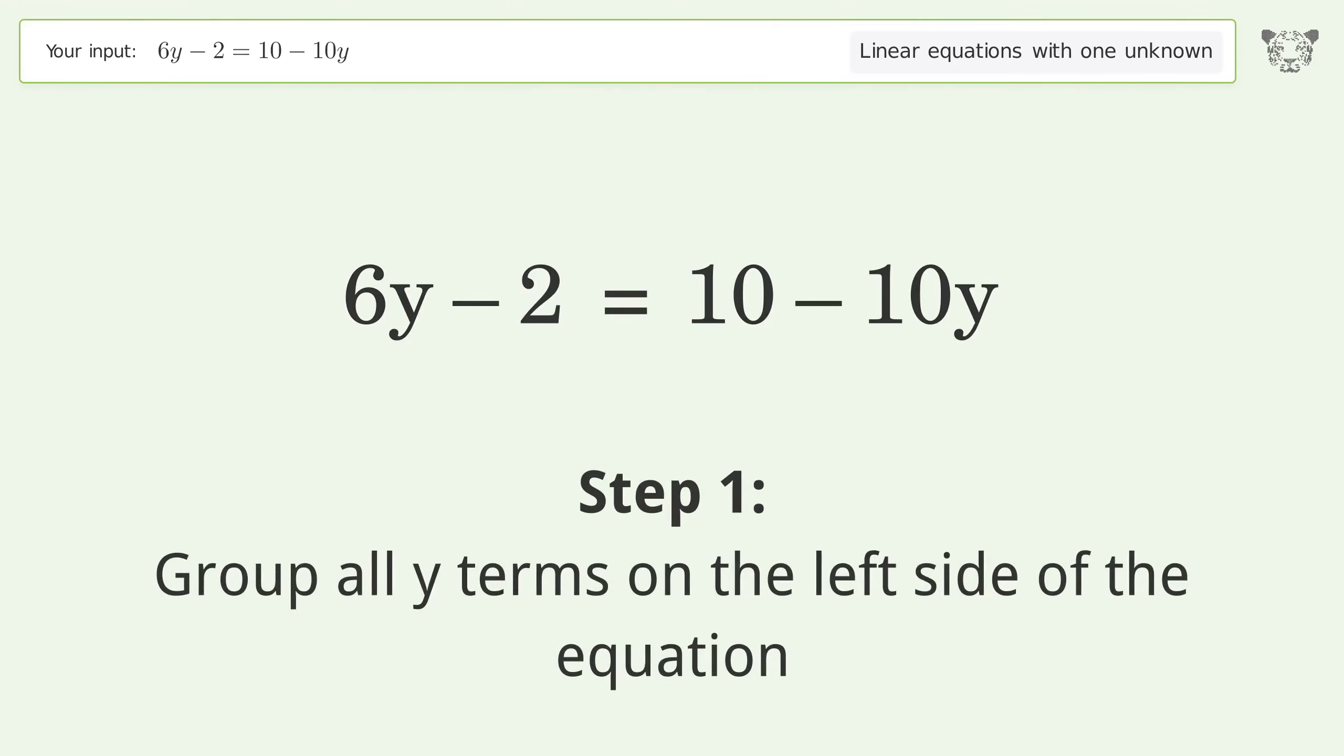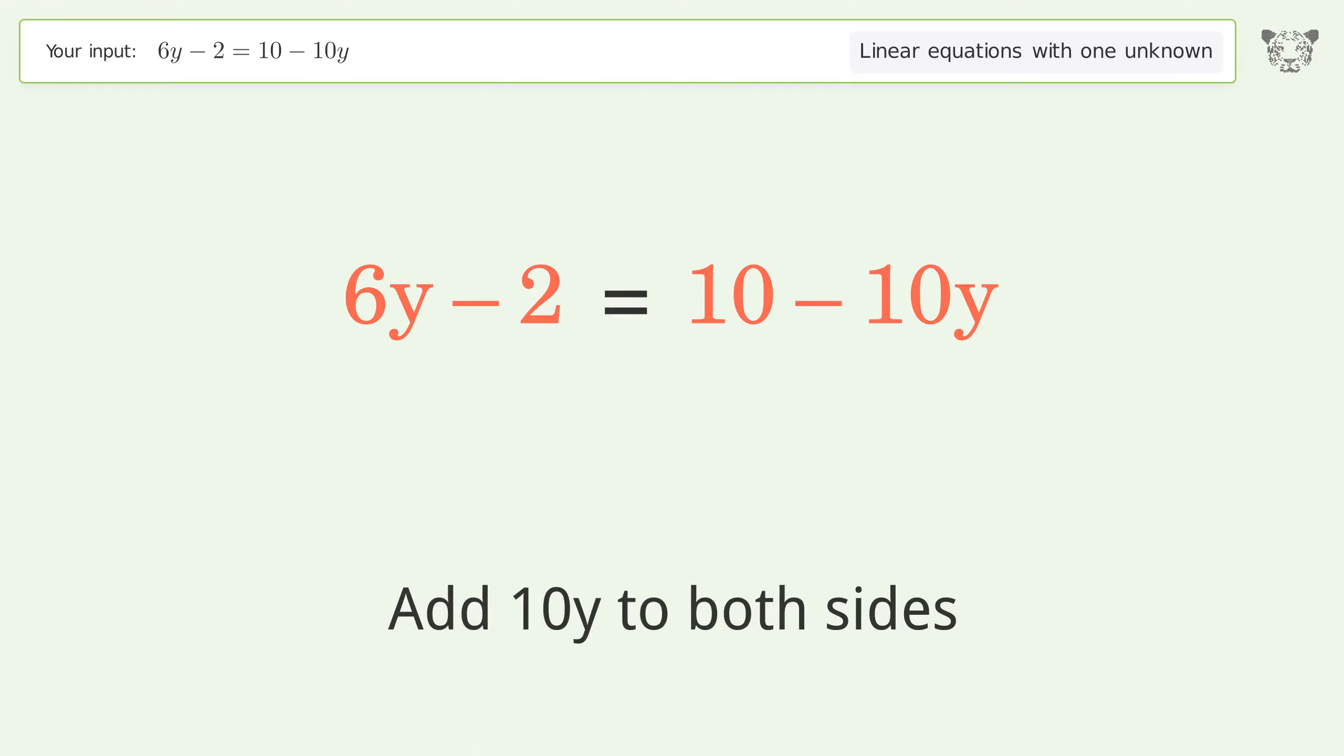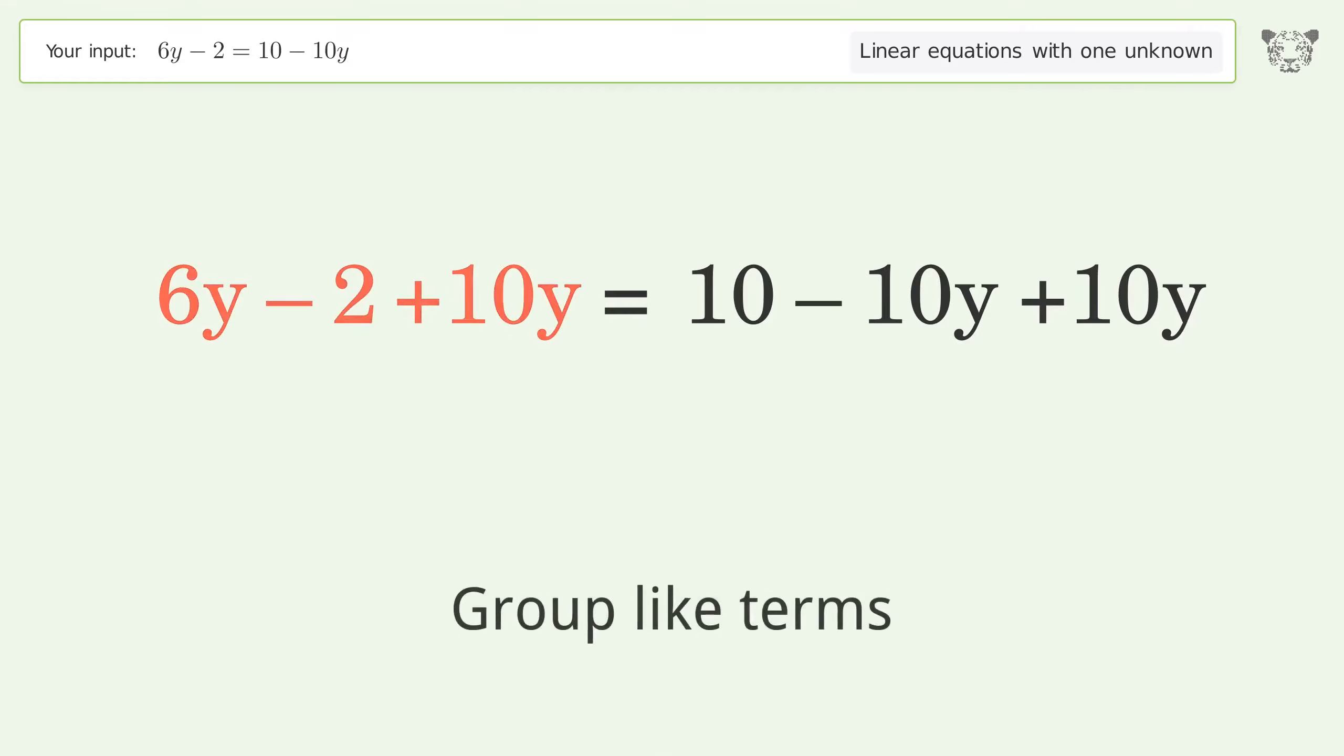Group all y terms on the left side of the equation. Add 10y to both sides. Group like terms. Simplify the arithmetic.